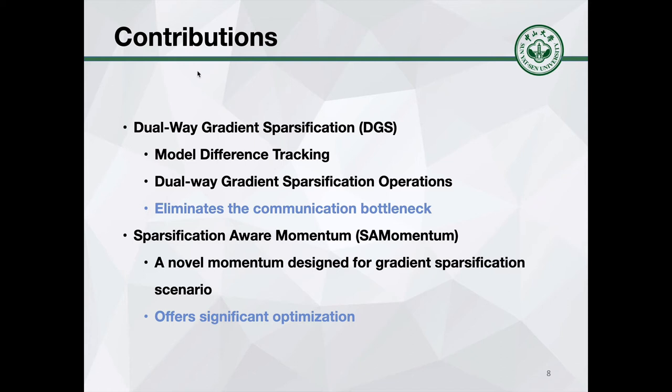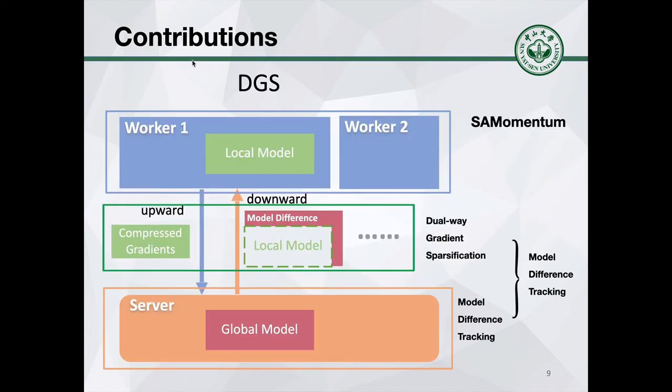In this paper, we propose DGS, a novel approach for async training to overcome the communication bottleneck and offer significant optimization in sparse scenarios. Different from existing async training where workers need to download the whole model from the server, we let workers download the model difference between global and local from the server. Accordingly, DGS can sparsify both downward and upward communication to reduce the communication volume. Such a dual-way compression approach can significantly reduce the communication cost in async training.